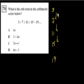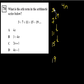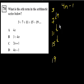Each term in the sequence is going to be 4 times the nth term, but that doesn't quite work out. If this is the first term, 4 times 1 is 4, but 3 is 1 less than 4. And 4 times 2 is 8, and 7 is 1 less than 8. And 4 times 3 is 12, but 11 is 1 less than 12. So it seems like all of these are 1 less than a multiple of 4, so the nth term is going to be 4n minus 1.